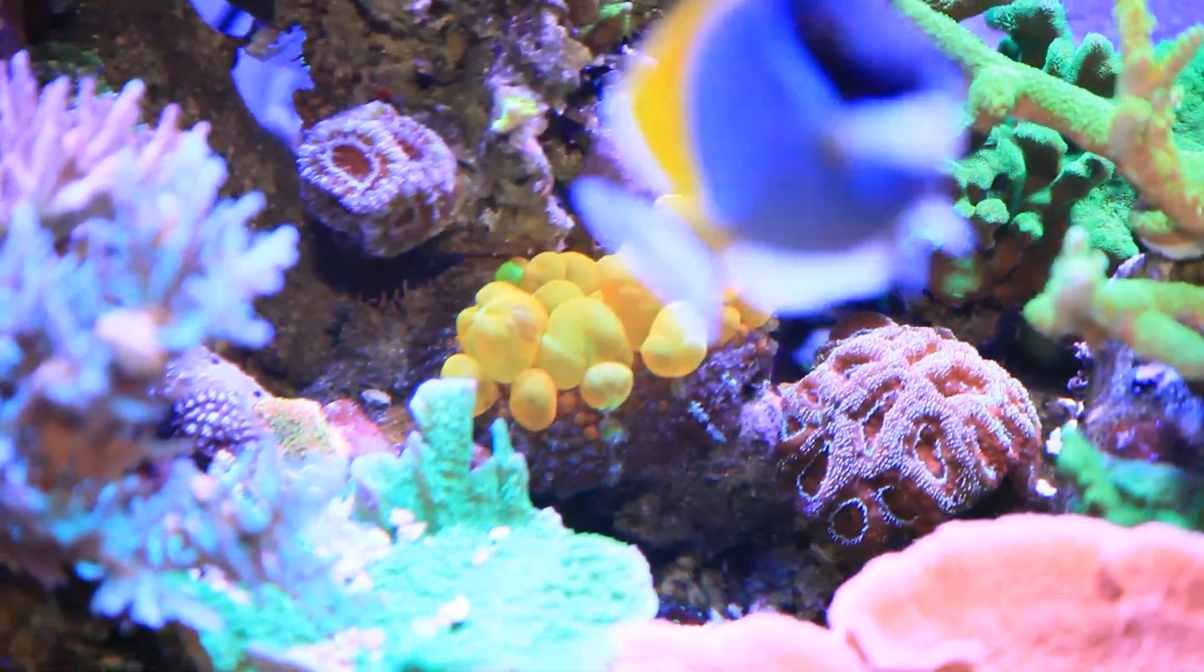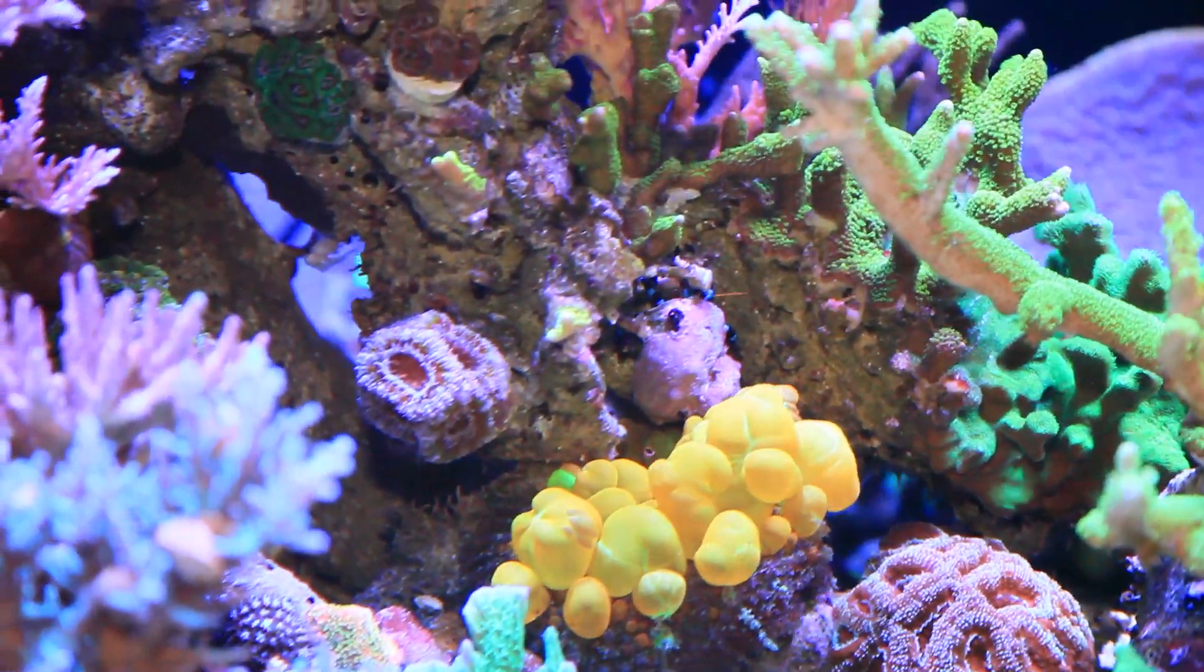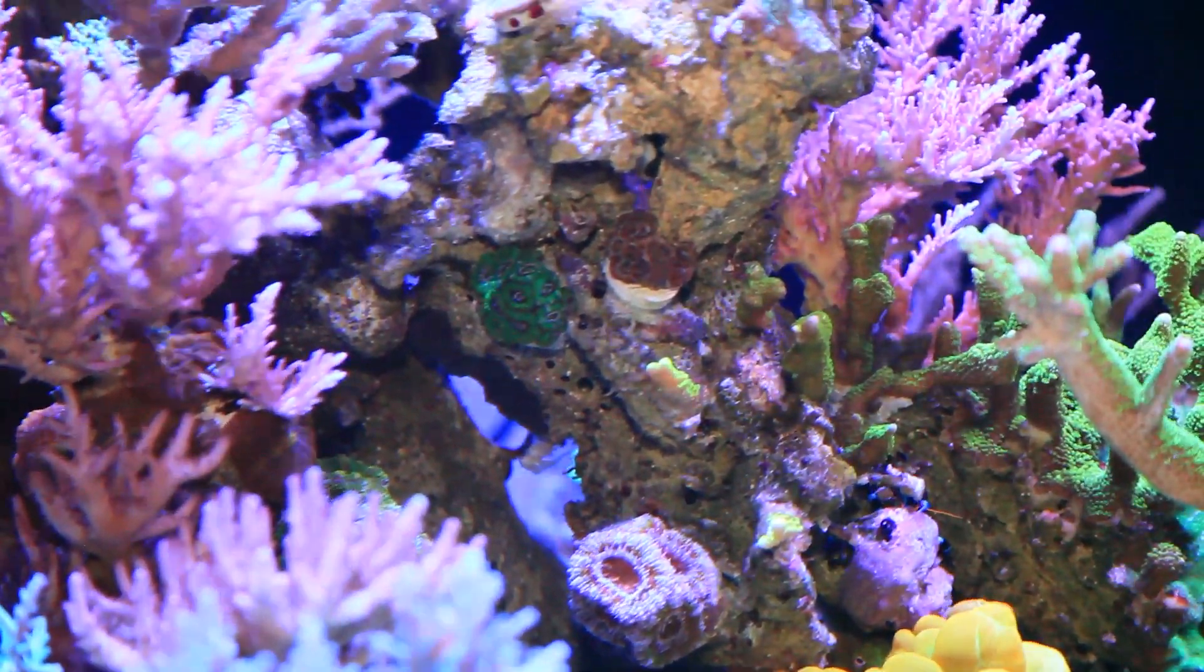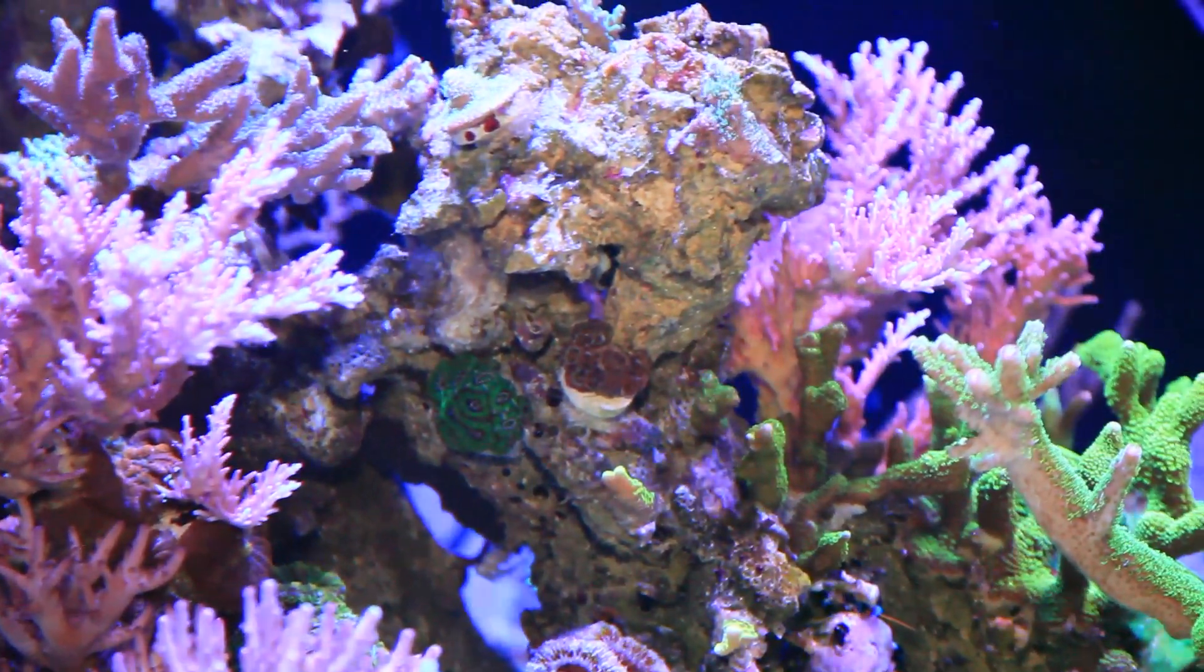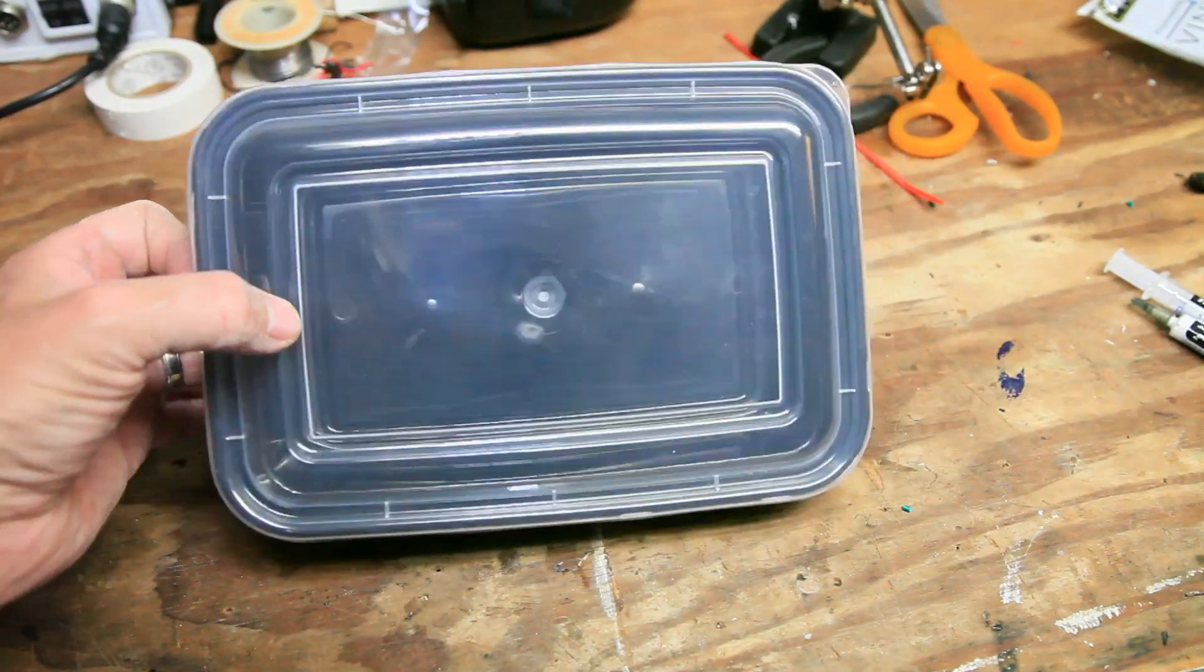For myself, in past setups, the algae took residence in corner overflows, hidden away behind rock work, but in this setup it seems to want to grow in the dimly lit caves and overhangs, and there are plenty of them in this build. This is where algae scrubbers come in.